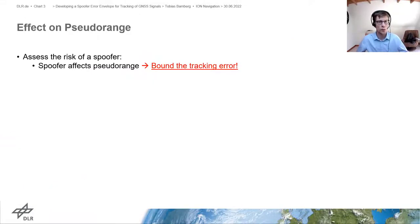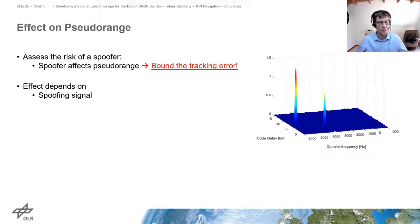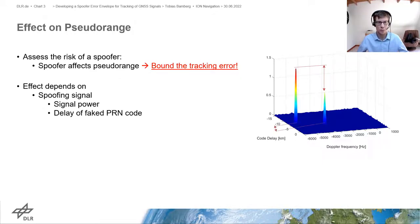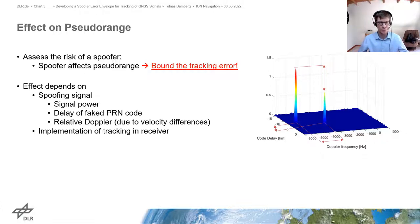To assess the risk of a spoof we need to bound the tracking error. On the one hand it depends on the spoofing signal — meaning the signal power, the delay of the fake PRN code, and the relative Doppler. On the other hand it depends on the implementation of tracking in the receiver.